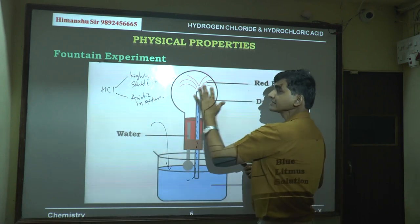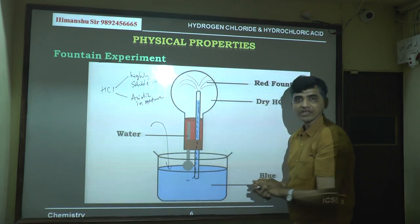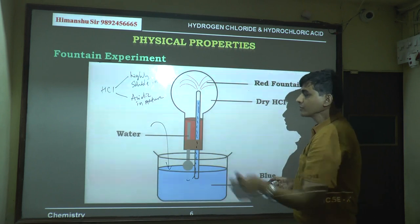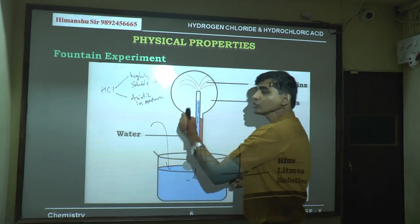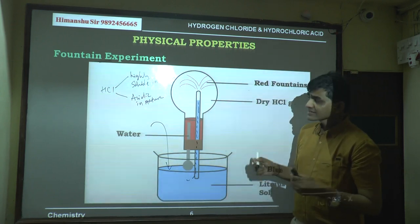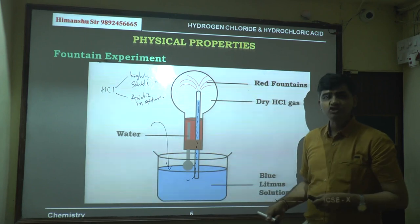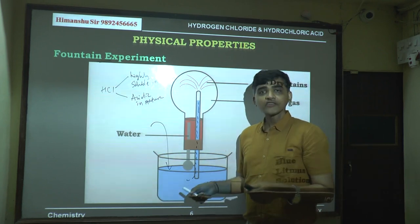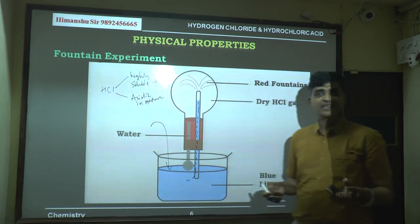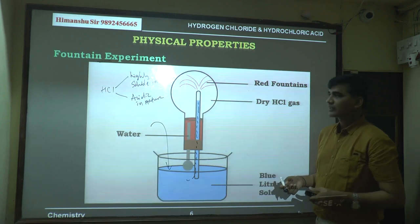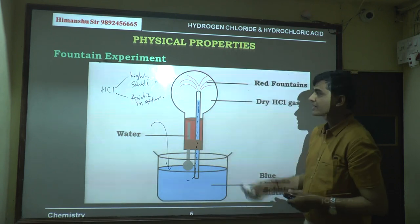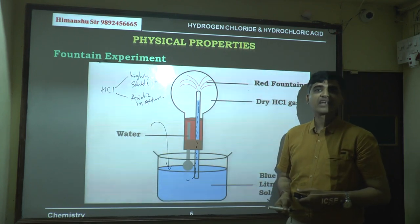Since the HCl gas is acidic, the blue litmus solution turns red as it enters — producing a red fountain. This proves that HCl is acidic in nature. Both hydrogen chloride and ammonia can be used in the fountain experiment to demonstrate high solubility in water. If methyl orange or alkaline phenolphthalein is used instead of blue litmus, the color of the fountain will change accordingly based on the indicator's behavior in acid.